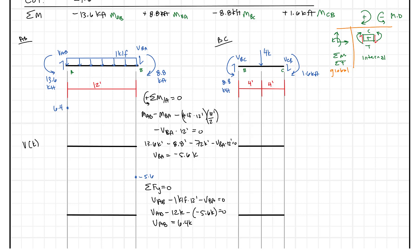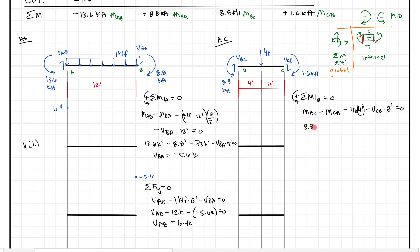Next, we repeat this process for beam BC. Summing moments about point B equals zero: MBC minus MCB minus four kips times four feet minus VCB times eight feet equals zero. Substituting in, we get 8.8 minus 1.6 minus 16 kip-feet minus VCB times eight feet equals zero. Solving for VCB gives minus 1.1 kips.